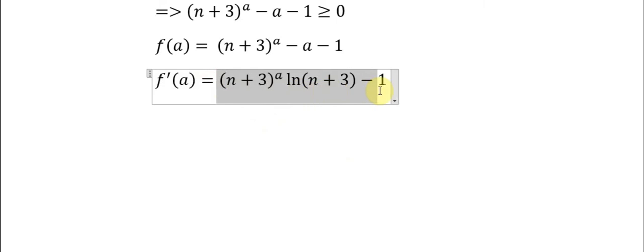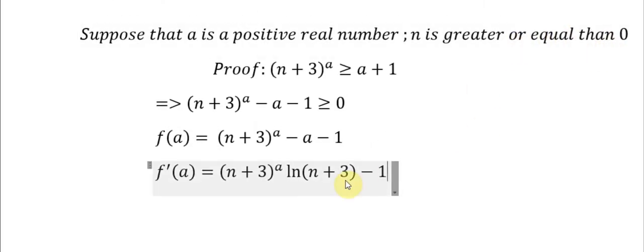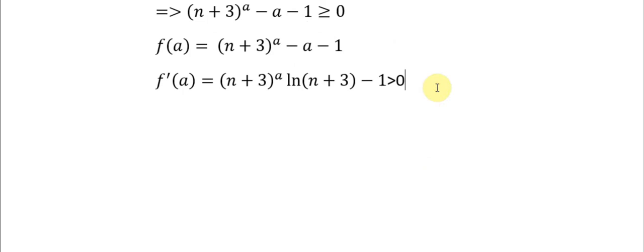If we consider this function, you can see that if I put a equals 0, we still get the logarithm base e of (n + 3). And we know that n is greater than 0, so ln(n + 3) - 1 is greater than 0. So this is an increasing function.